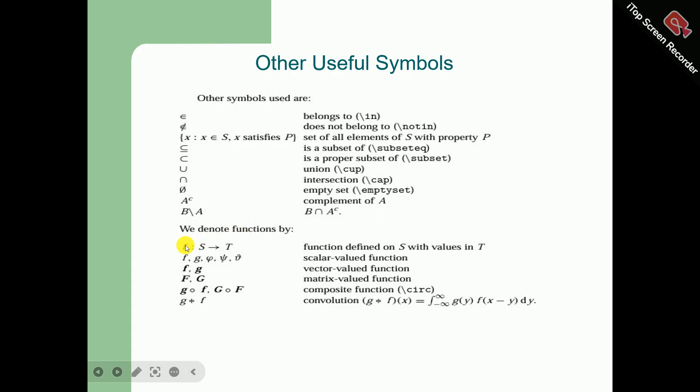We denote some functions like this: a function defined on S with values in T. For example, if function f is defined on S, then it takes on values in T. These f, g are scalar-valued functions. This f, g is vector-valued function. This capital F and G in bold means matrix-valued functions. G dot F means composite function. And this is convolution.